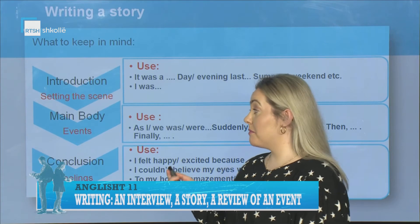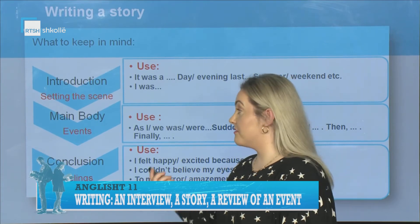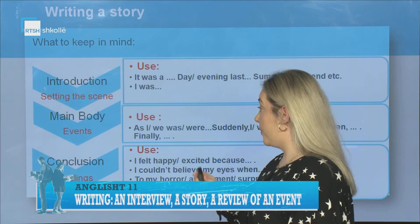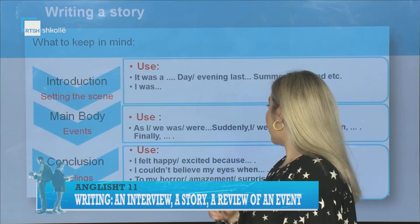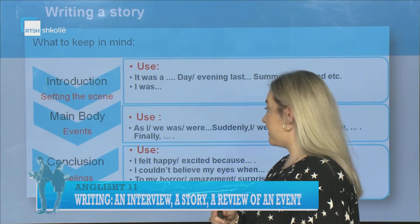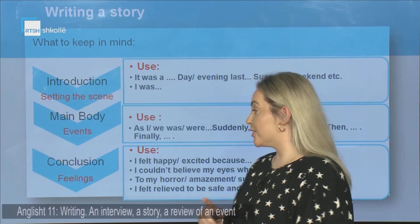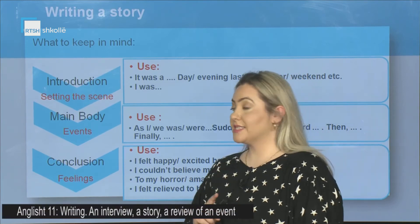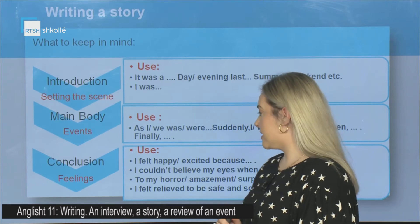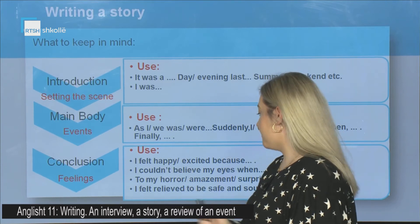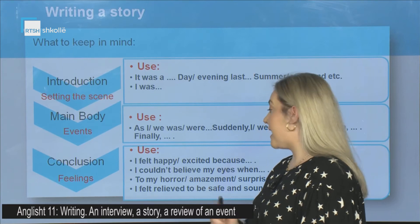In the main body, when you write about the events, use phrases like: 'As I / we was / were, etc.', 'Suddenly, etc.', 'Finally, etc.' In the conclusion, when you express your feelings, use phrases like: 'I felt happy / excited because I couldn't believe my eyes', 'to my horror / amazement / surprise, etc.'